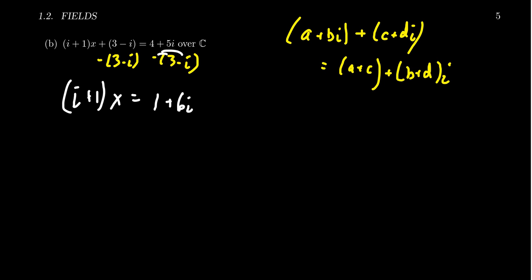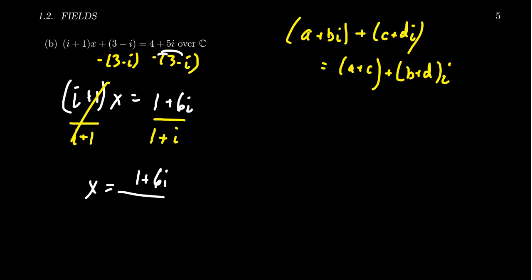To get rid of the (i plus 1) on the left, we divide both sides by (1 plus i). This cancels on the left-hand side, so X equals (1 plus 6i) over (1 plus i). This is the solution, although we should simplify it.